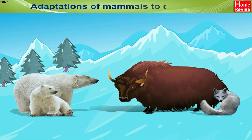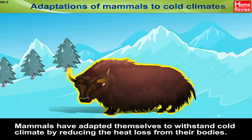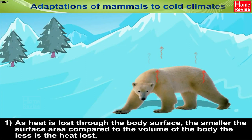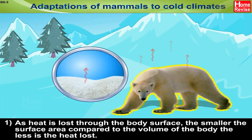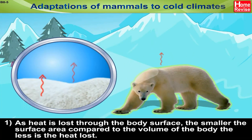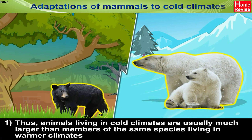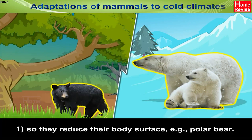Adaptations of mammals to cold climates: Mammals have adapted themselves to withstand cold climate by reducing the heat loss from their bodies. As heat is lost through the body's surface, the smaller the surface area compared to the volume of the body, the less is the heat lost. Thus, animals living in cold climates are usually much larger than members of the same species living in warmer climates, so they reduce their body's surface.